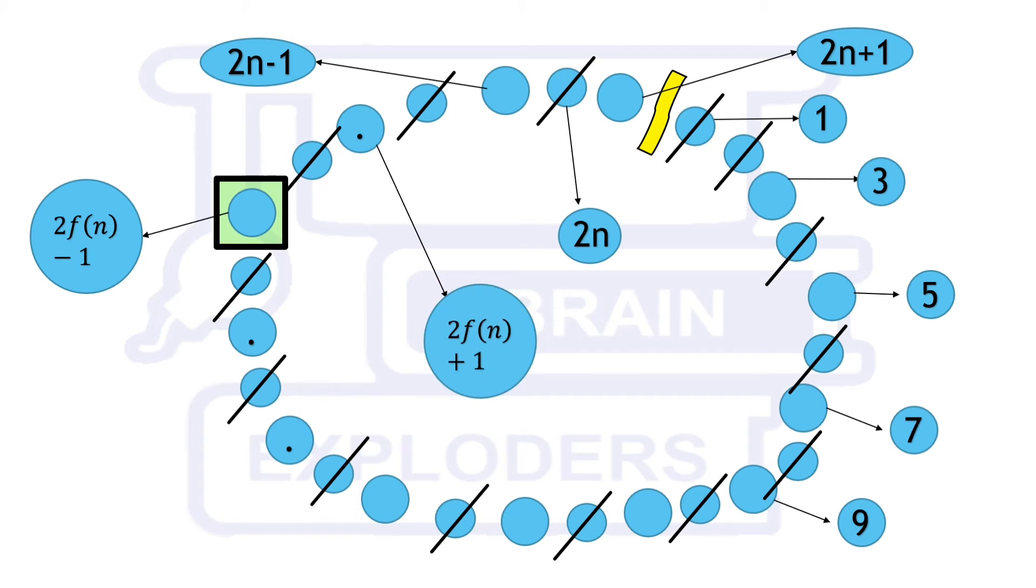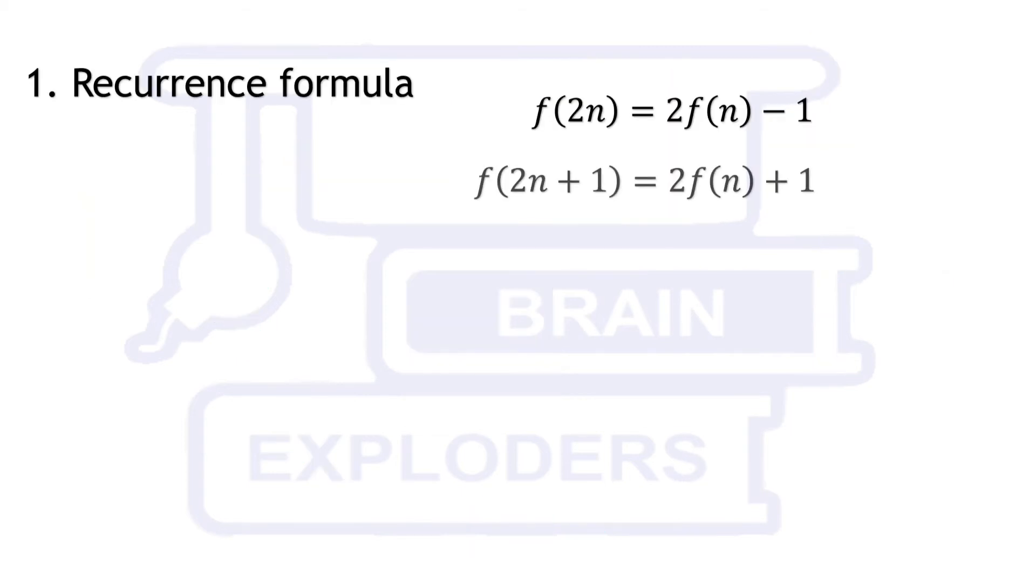Recurrence formula obtained here is f(2n plus 1) equals 2f(n) plus 1. Using formula for both even and odd, let's calculate the value of f(13).